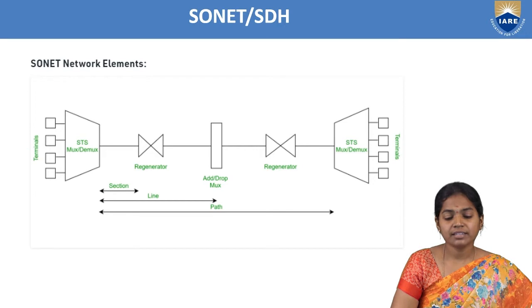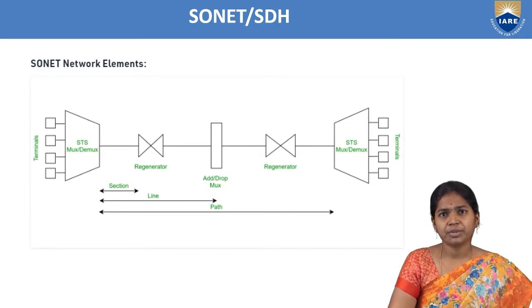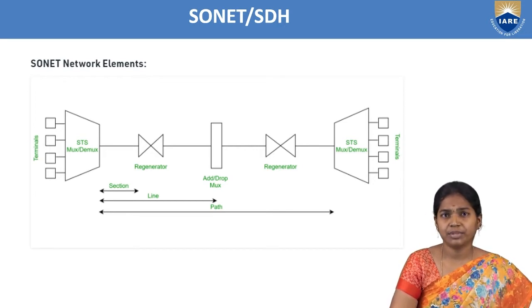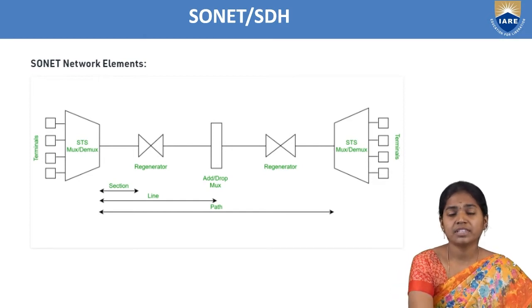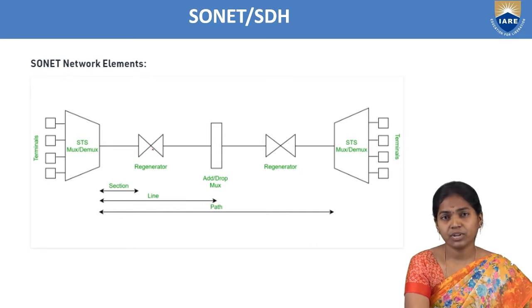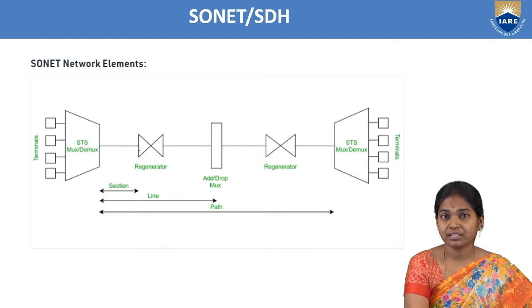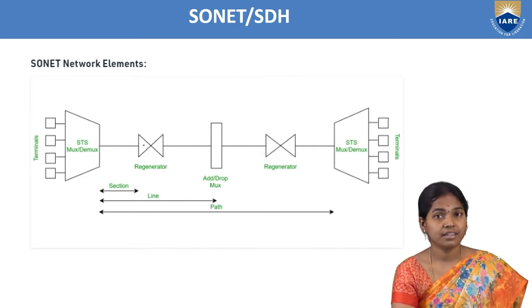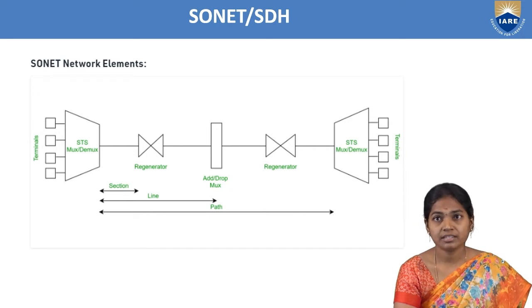The STS multiplexer and demultiplexer take input signals — multiple input signals — and with the use of the multiplexer, multiply the number of signals and transmit them. The regenerator is a repeater — with the use of this regenerator we can increase the signal strength.